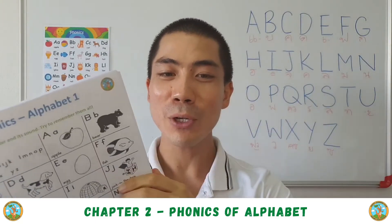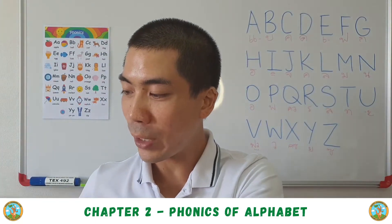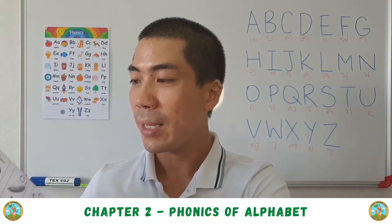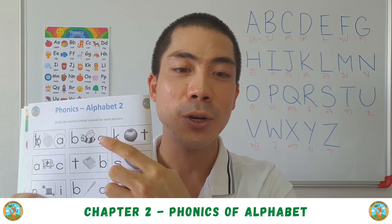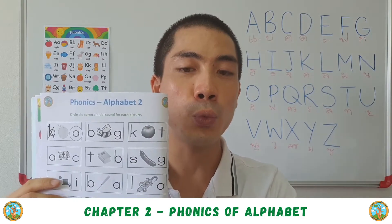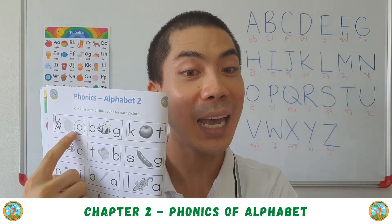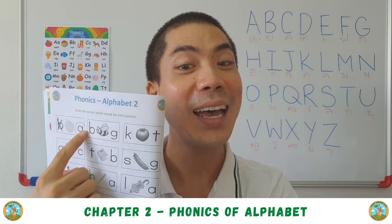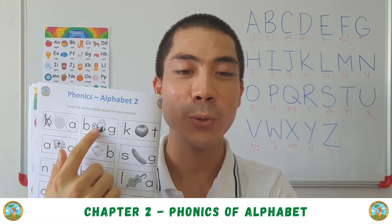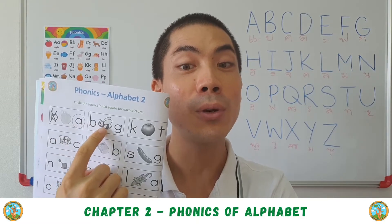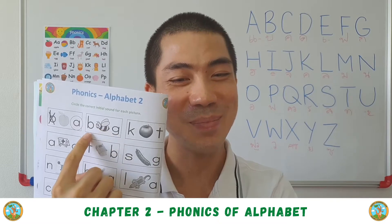So now we go to the next page. Here we have to circle the first letter of each word. For example, this is apple — so it's A, A, apple. Circle the correct answer. Next one is B, B, B.